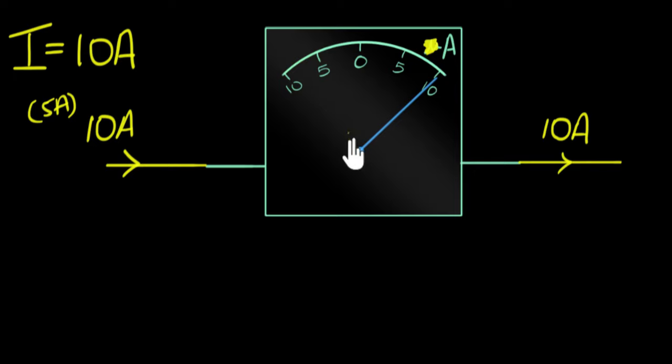But remember, in reality, this galvanometer will only show 10 as a deflection when only 10 microamperes goes through this. So in other words, what we need to do is when 10 amperes is flowing into this galvanometer, somehow we need to ensure that only 10 microamperes actually flows through the galvanometer. Does that make sense? This is what we need to achieve.